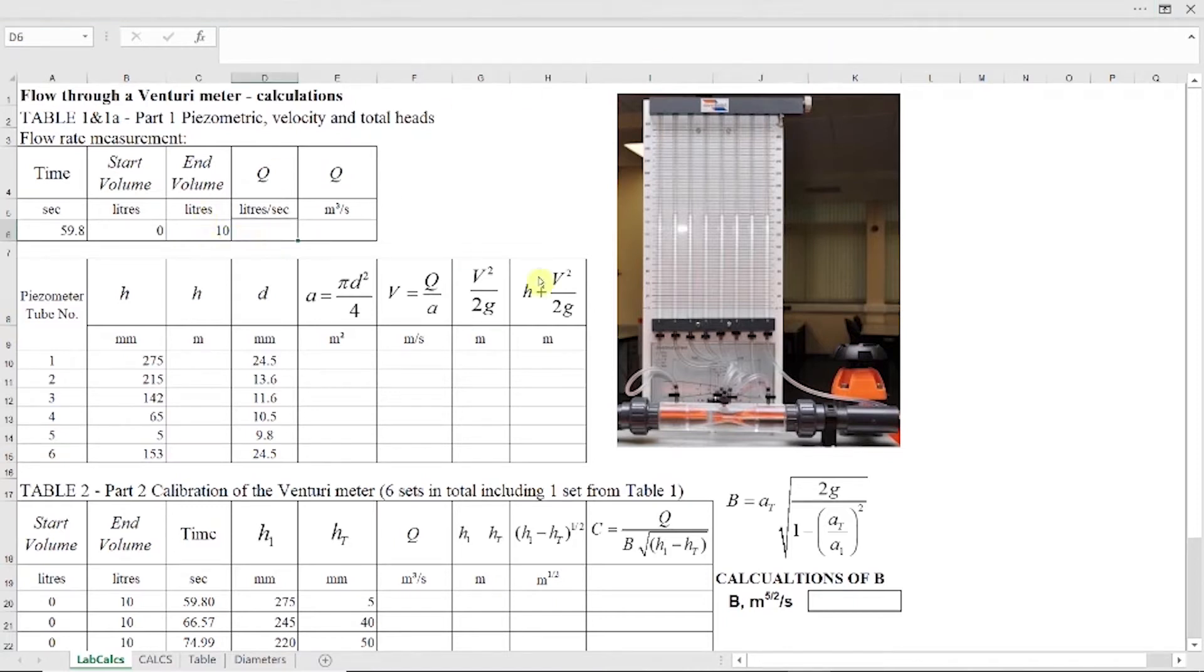First, I need to calculate flow rate. To calculate flow rate, I need to know the volume filled into the hydraulic bench divided by time, or end volume minus start volume divided by time. So I write the formula equal, open bracket, end volume minus start volume divided by time, and I click on time, A6. Now I need to convert flow rate into cubic meters per second. I have previous value in liters per second. To convert into cubic meters per second, I just divide by 1,000 because we know that in one cubic meter, we have 1,000 liters.